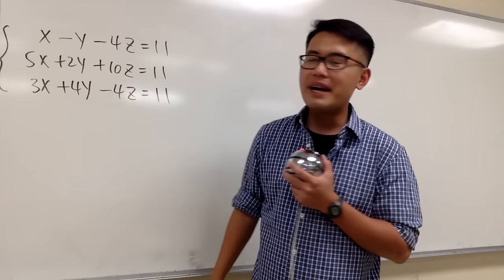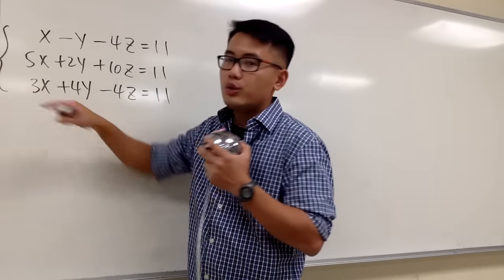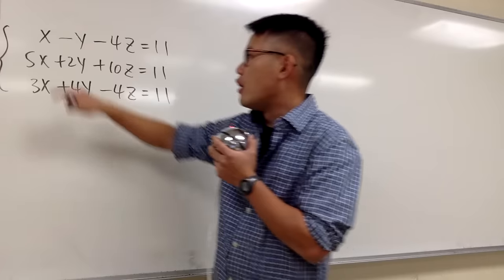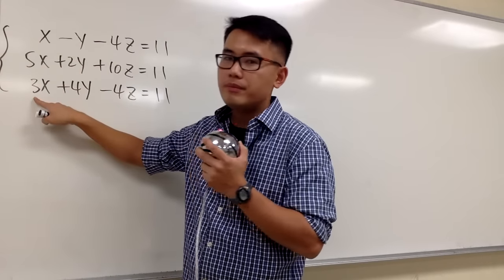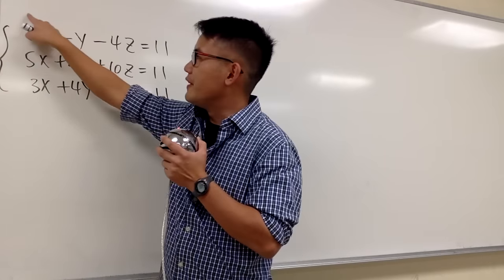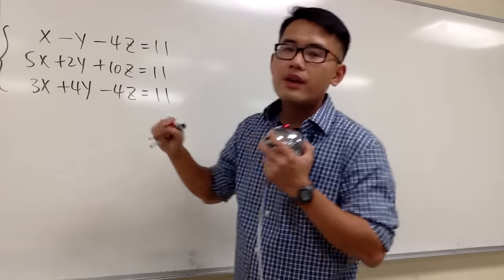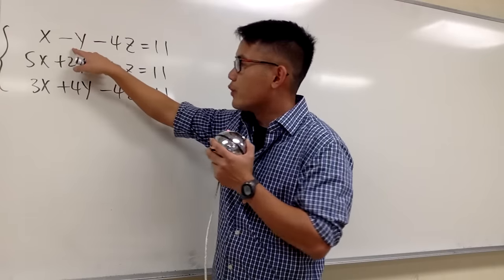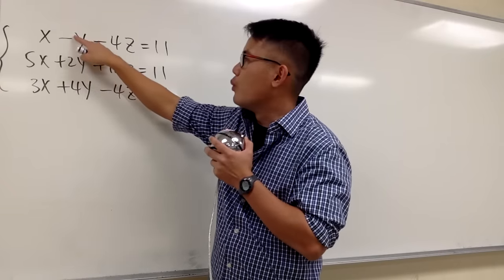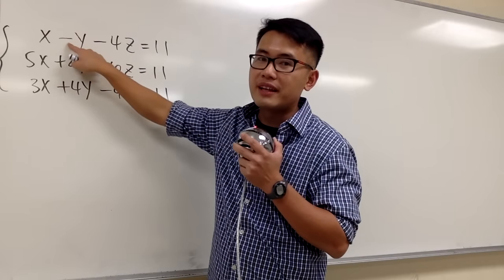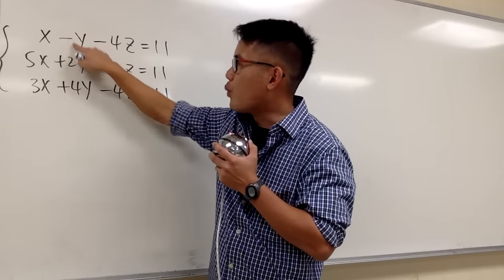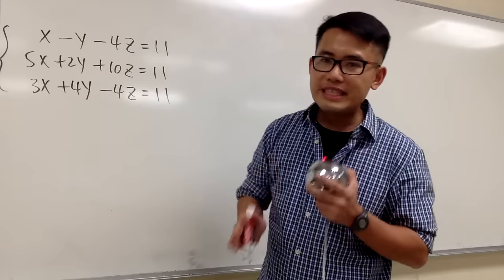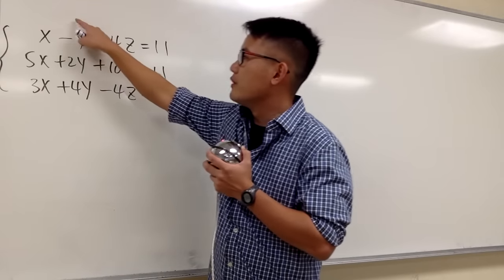It's up to you. If you want to eliminate x, you have to first look for the lowest common multiple of 1, 5, and 3, and that will be 15. And if you want to eliminate y first, you have to look for the lowest common multiple of 1, 2, and 4. The LCM for that is going to be 4.